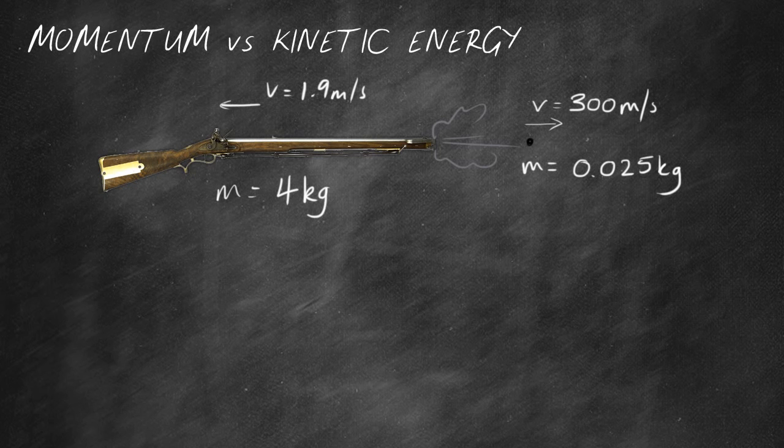So that's because the bullet has a lot more kinetic energy. Now I hope you remember the kinetic energy equation. Kinetic energy is equal to a half times the mass times the velocity squared. So first of all, I'm going to work out the kinetic energy of the rifle as it recoils back towards the rifleman.